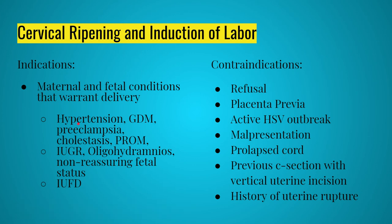For any of these procedures — cervical ripening or induction — there are indications and contraindications. Indications mean there's a mom and baby ready for delivery with a condition that says it should begin sooner rather than later. Maternal conditions include hypertension — whether chronic or preeclampsia — where we time delivery before mom gets really sick. For preeclampsia, the recommendation is delivery no later than 37 weeks. For chronic hypertension, the current recommendation is 38 weeks with fetal surveillance throughout, provided there's no superimposed preeclampsia.